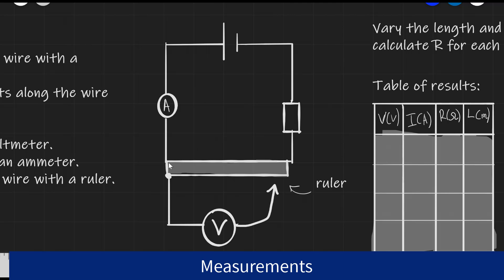We also have a wire that has been attached to a ruler. We also have a voltmeter that we can vary the position of the point at which it connects to the wire.